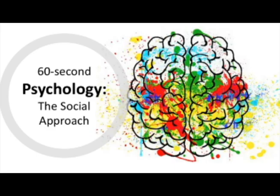Finally, advertisers use social influence to cause us to conform to behaviours such as buying a certain brand to fit in, or using reviews to influence consumers to believe that other people are more informed than them about a product. Meanwhile, the use of gender stereotypes in advertising in the UK has actually now been banned.